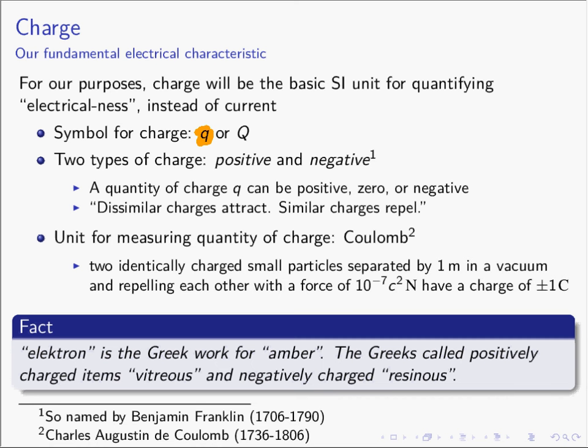Now, charge — unlike length, mass, and temperature, which all have to be strictly positive — charge can be positive, it can be negative, and it can be zero. You may have a positive amount of charge, your electricalness may be a positive number, or it may be a negative number. You may even possibly have zero charge.